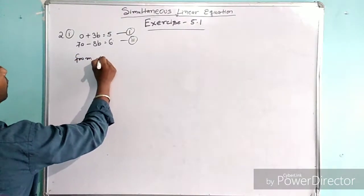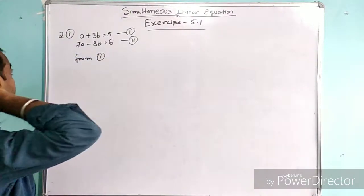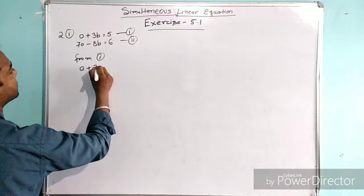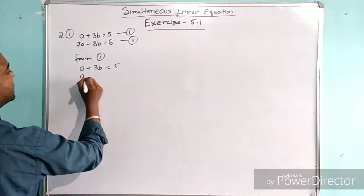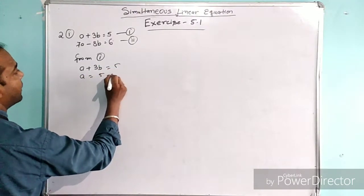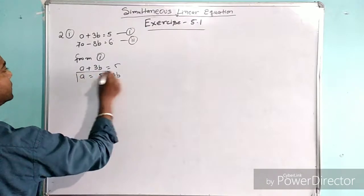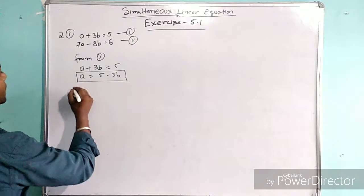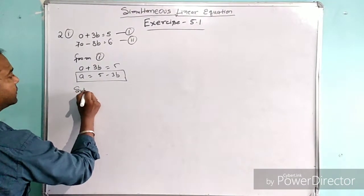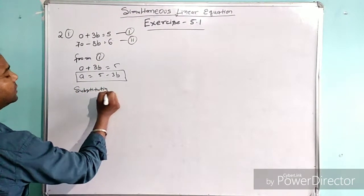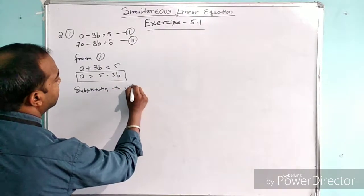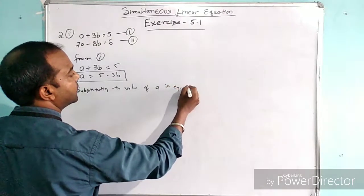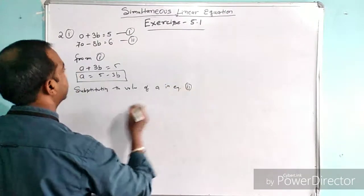We will write from equation 1. We have a plus 3b equal to 5, so we keep a here: a equals 5 minus 3b. This is the temporary value of a. Now we will substitute this value of a into equation number 2.